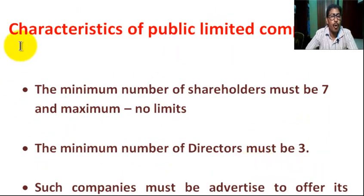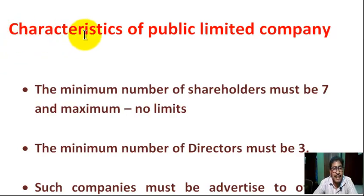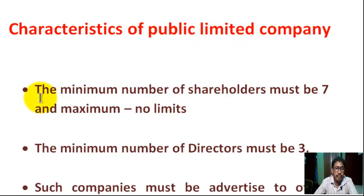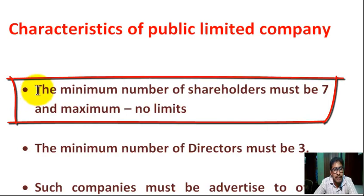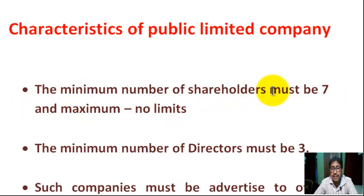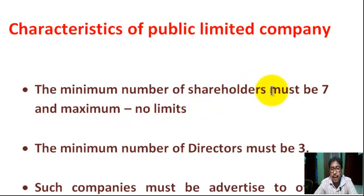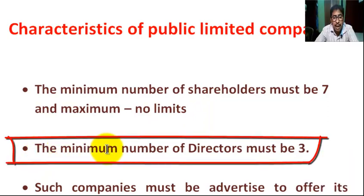Now, what are the characteristics of public limited company? Number one, the minimum number of shareholders — that means members — must be seven, and the maximum is no limit. Next, the minimum number of directors must be three.